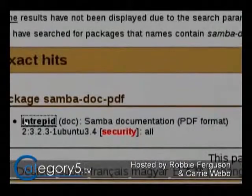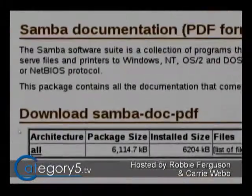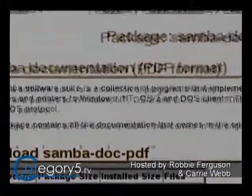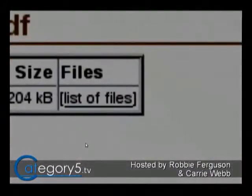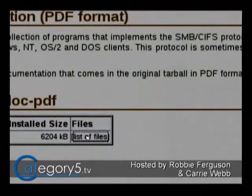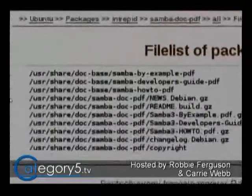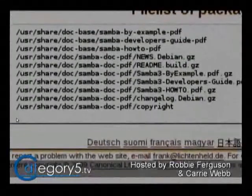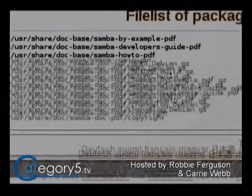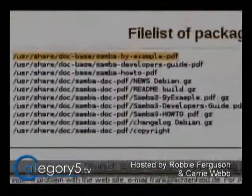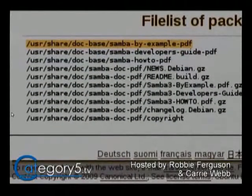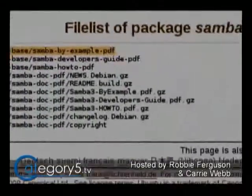So just click on that and you'll see the information about what this is. But then you'll see over here: Files, and you'll see list of files - that's what we're really interested in. When you click on that, it actually shows you the files that this is going to put on your computer. In this case, because we're looking for the PDF file, we can see that it's putting that in /usr/share/doc/samba, by-example.pdf, or something along those lines.